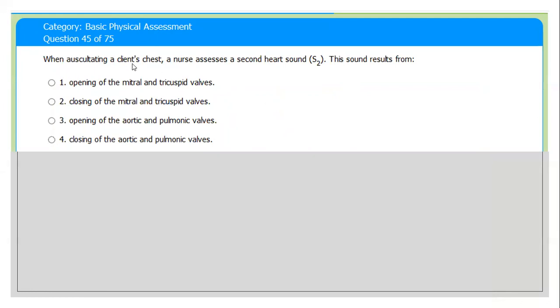Next question. When auscultating a client's chest, the nurse assesses a sound - we call it second heart sound or first heart sound. The examiner is asking what is the reason or result that can cause second heart sound. We have two heart sounds: S1 and S2.